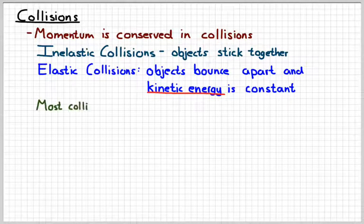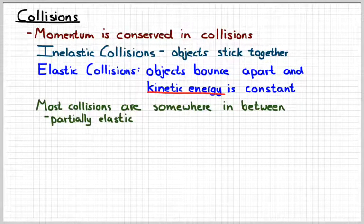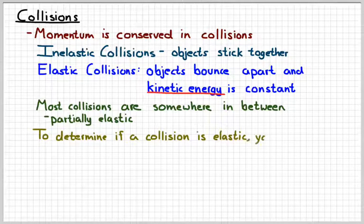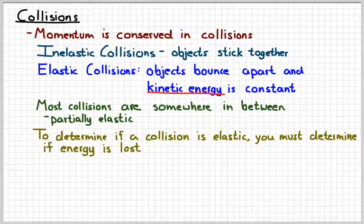You can have a situation where the objects bounce apart but the kinetic energy changes. In fact, most collisions are going to fall in that category. We refer to those as partially elastic — they're still bouncy, but some energy is lost in the collision. So to determine if we have an elastic collision, we check whether the kinetic energy before the collision equals the kinetic energy after. If energy is lost, we call it a partially elastic collision.